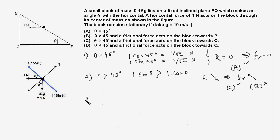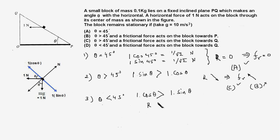Case 3: theta is smaller than 45 degrees. The force 1 cos theta pulling the block up the plane is larger than 1 sin theta pulling it down. Therefore the resultant of these two forces acts in the upward direction along the plane. To oppose this resultant and keep the net force zero so the block remains stationary, the friction force points towards P. Therefore option D is also incorrect.